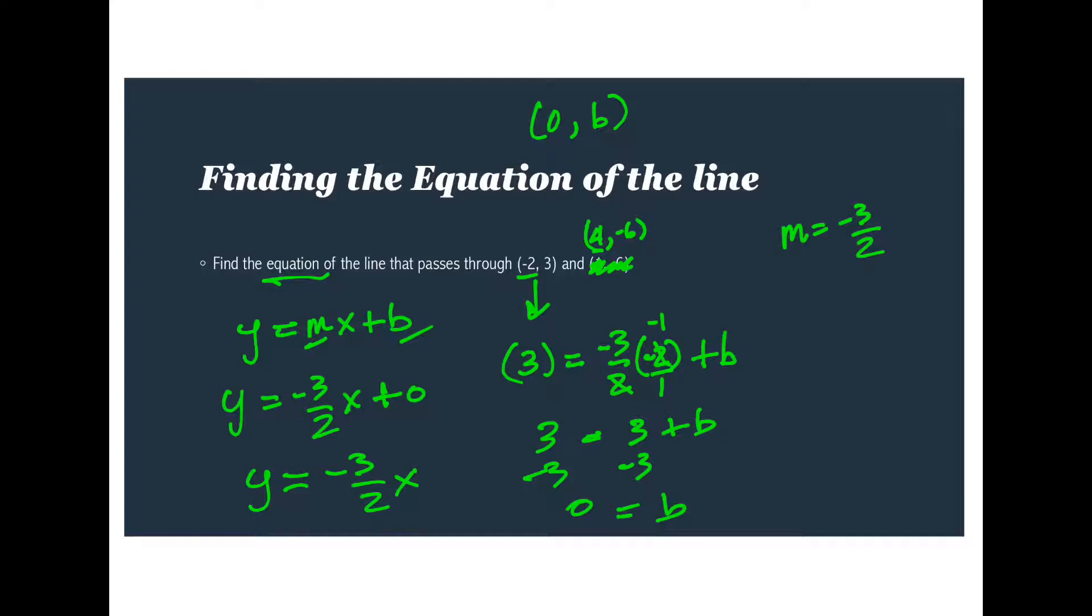Now this would work also if we had used this point. And I want to stress that and demonstrate that for you here. Negative six and negative three halves times x. In this case, x was a four plus b. So again, taking out the x and the y and putting these two numbers in their place. Two goes into four twice. So this gives me negative six plus b equals negative six. And six to both sides, solve for b, we get zero. So no matter which point we used, we ended up getting the same equation. So this is the equation of the line that passes through those particular points.